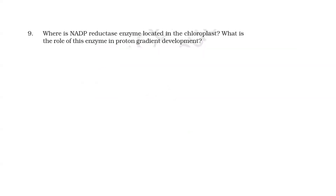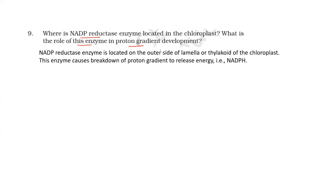Where is the NADP reductase enzyme located, and what is its role in proton gradient development? This enzyme is located on the outer side of the thylakoid membrane. This enzyme causes breakdown of the proton gradient by removing protons from the stroma and making NADPH.